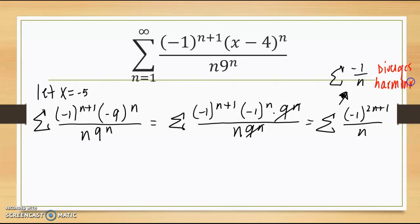This is still your divergent harmonic. It's just the opposite of it. So instead of my terms being 1, 1 half, 1 third, 1 fourth, it's negative 1, negative 1 half, negative 1 third, negative 1 fourth. So negative 5 is going to diverge at that endpoint.